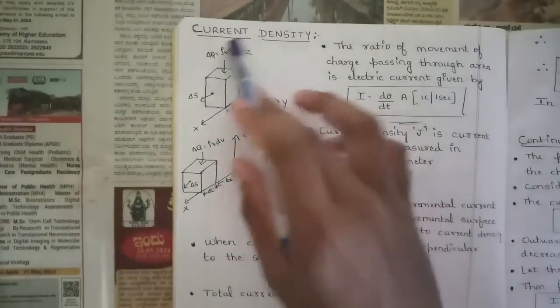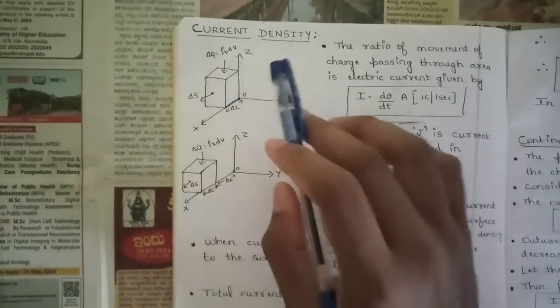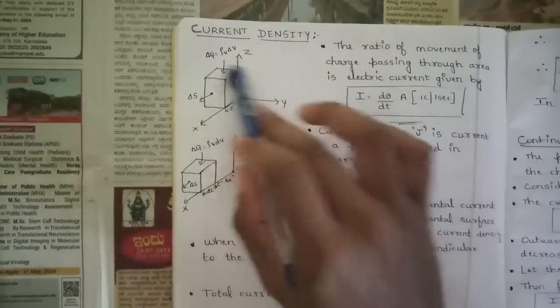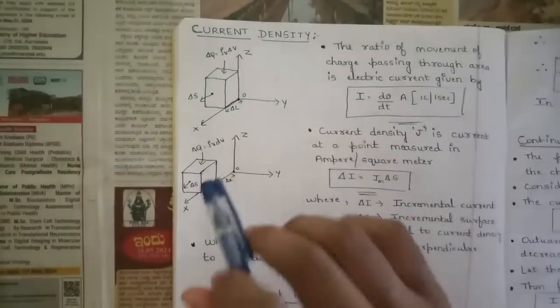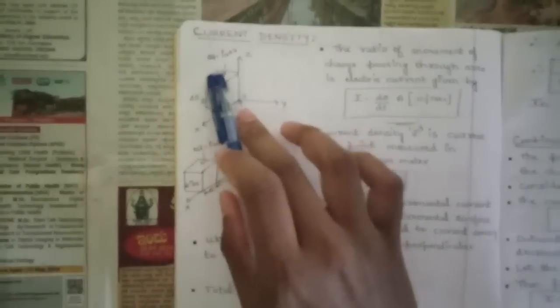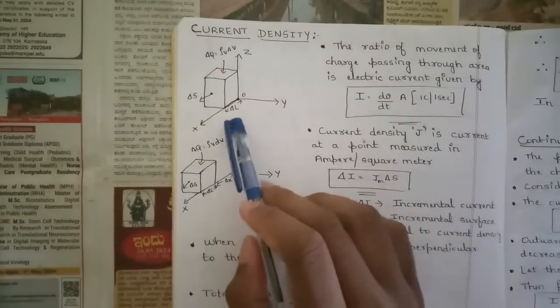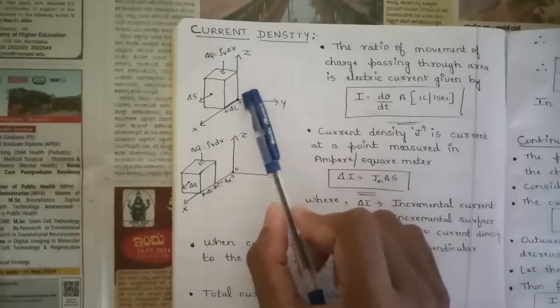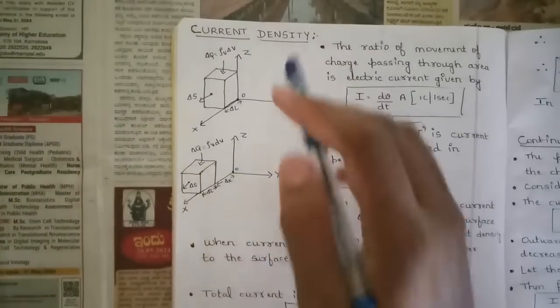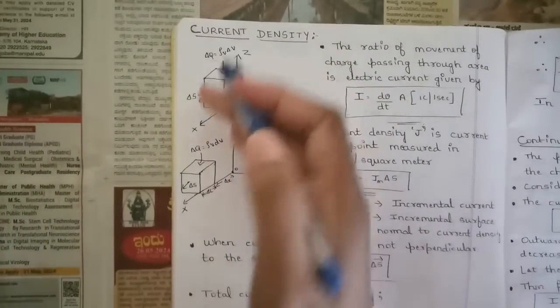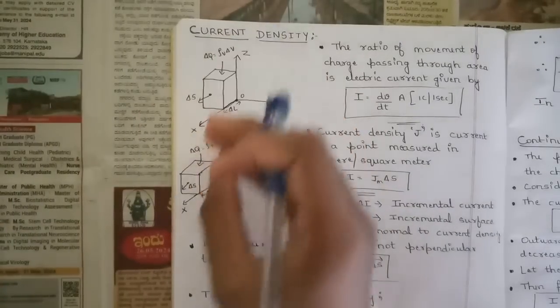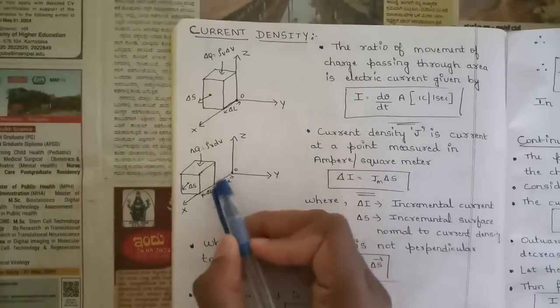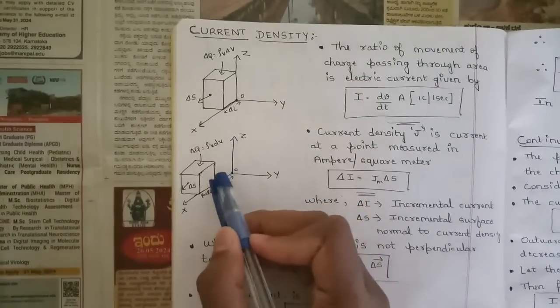In this figure we have a three-dimensional surface where a cube-like structure is kept with a particular volume. We know that Delta Q is equal to rho V into Delta V. Delta S is the surface, Delta L is the path, and this is the origin. In the second figure the cube structure is moved forward, producing a space called Delta X.